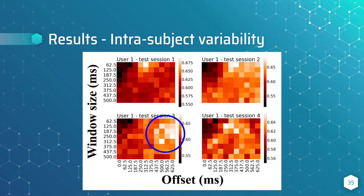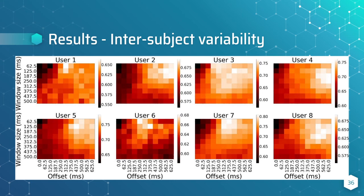However, something happens with the third test session. This time, the best offset seems to be at 600ms and with a higher window size. It is demonstrating that the network is able to learn this intra-variability and adapt. What does really happen to the user in this session? We don't really know, but the network doesn't care and it is still learning.